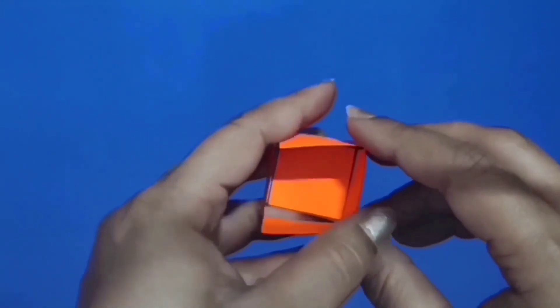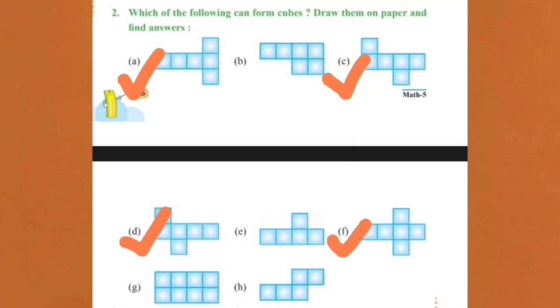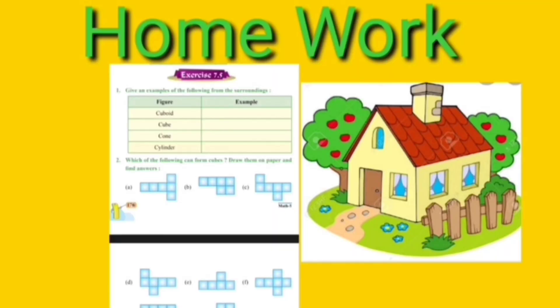Dear kids, that means part A, part C, part D, and part F — these figures make cubes. Now, dear students, for homework, practice question number 1 and question number 2 of exercise 7.5. Thank you so much.